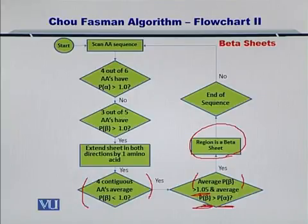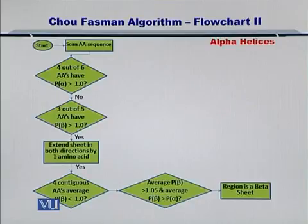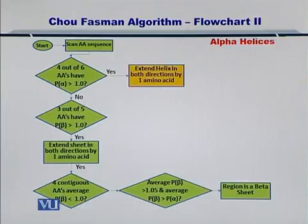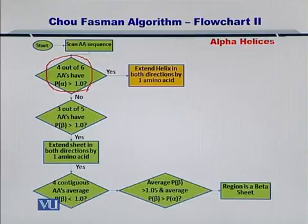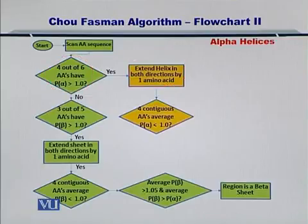If the overall average was greater than 1.05 and the propensity for forming a beta sheet was more than for forming an alpha helix, we finalized the region to be a beta sheet, continuing until the end of the sequence. Now we are going to modify this algorithm and integrate the prediction of alpha helices. If 4 out of 6 amino acids had a propensity for forming an alpha helix greater than 1, you should not consider beta sheets but go on to predict alpha helices. You then extend the helix in both directions by one amino acid at a time, checking for 4 contiguous amino acids with propensity for forming an alpha helix falling below 1.